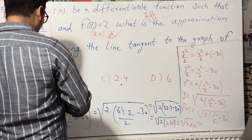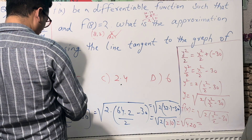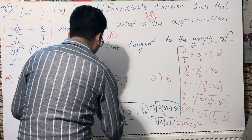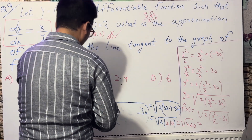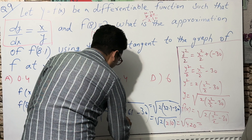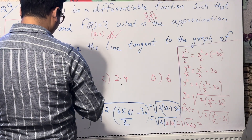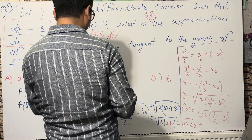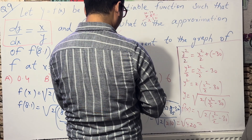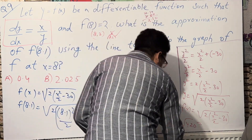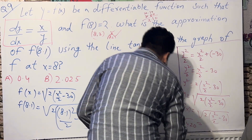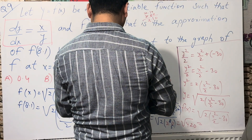Using the calculator: 8.1 squared equals 65.61. Dividing by 2 gives 32.805. Then 32.805 minus 30 equals 2.805. Multiplying by 2 gives 5.61. So we need the square root of 5.61.